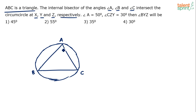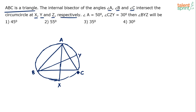Now, the internal bisector of angle A — an internal bisector of angle A is that line which divides angle A into two equal halves. You draw that line; it meets the circle at point X. The internal bisector of angle B meets the circumcircle at point Y, and the internal bisector of angle C meets the circumcircle at point Z. So AX, BY and CZ are the internal angular bisectors of triangle ABC.